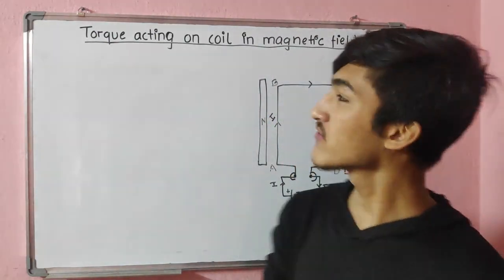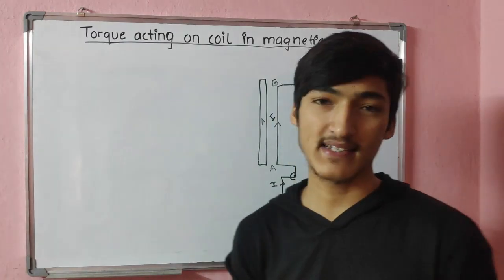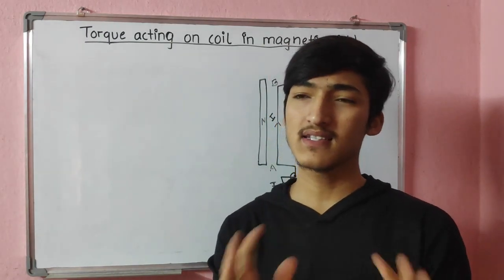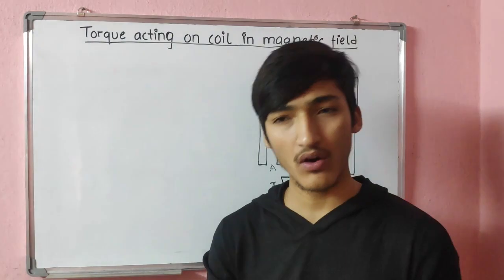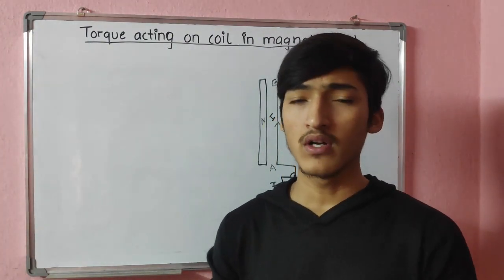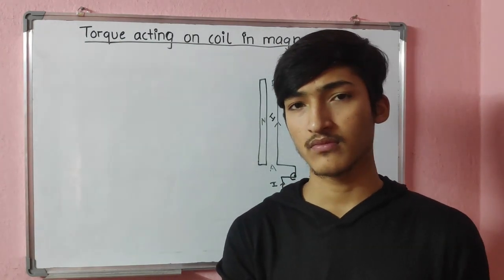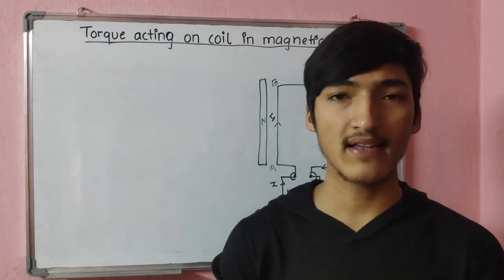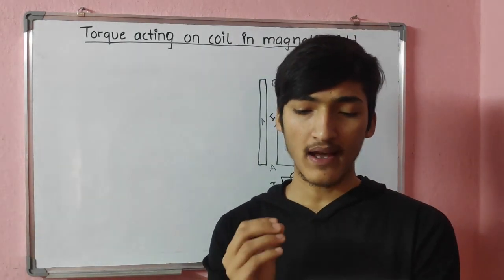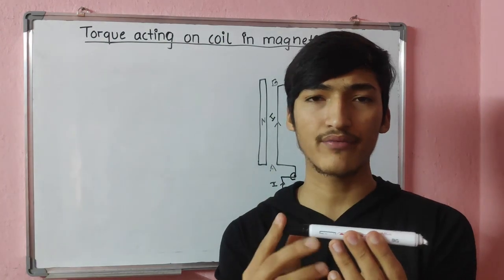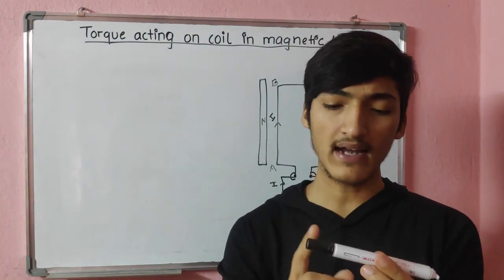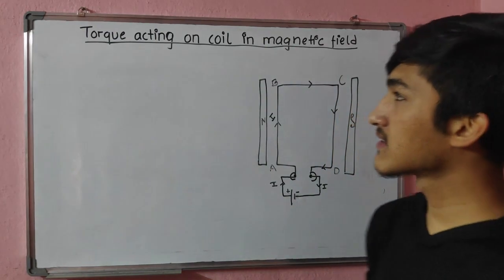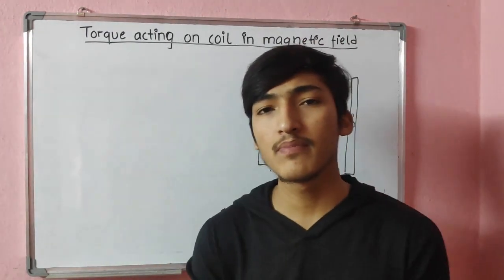Before deriving the expression for torque acting on a coil in a magnetic field, let us discuss what is actually meant by torque and the next topic, which is couple. These two terms — torque and couple — always come in rotational bodies. Torque is simply the force that is exerted on a body that produces a certain circular motion. For example, if I apply some force to this marker and it produces some rotational motion, then that force is known as torque.